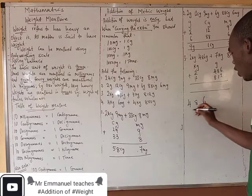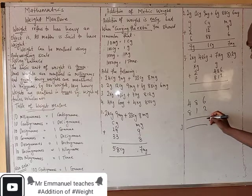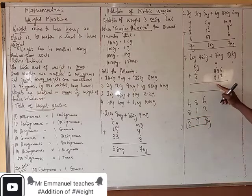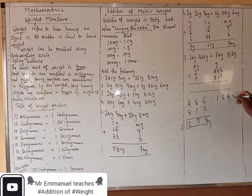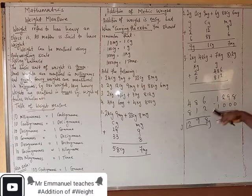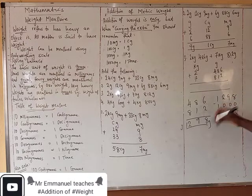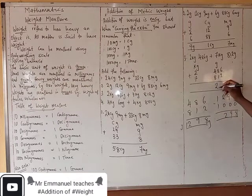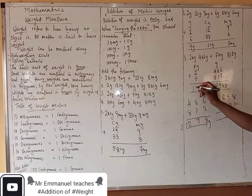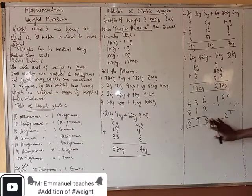Let's add 486 plus 812. 6 plus 2 is 8, 8 plus 1 is 9, and 8 plus 4 is 12 — so we have 1,298 grams. We can't write that here because it's more than 1,000. So we remove 1,000: 1,298 minus 1,000 is 298 grams. We write 298 grams. This 1,000 grams becomes 1 kilogram carried over. So 2 plus 1 is 3, and 3 plus 7 is 10 kilograms. Final answer: 10 kilograms 298 grams.